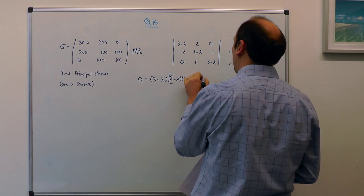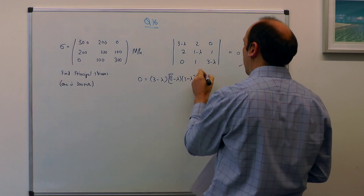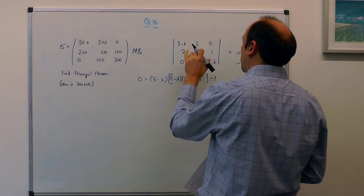So it is that times the matrix left behind, minus 2, which is that, times the matrix left behind.